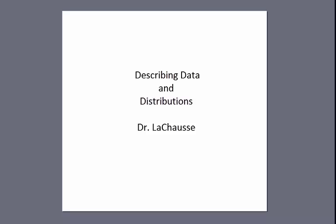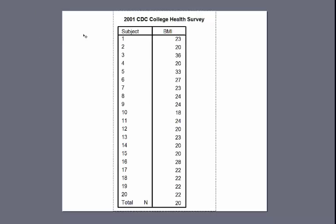In this video I'm going to discuss how to visualize and describe data. The example we're going to use throughout this video is the 2001 CDC College Health Survey — a survey the Centers for Disease Control and Prevention used among a random sample of college students throughout the United States. The data we're going to work with specifically is the 2001 BMI data. Here I have the raw data for 20 randomly selected subjects.